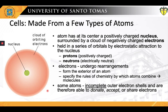It may not come as a surprise, but cells are made up of just a few types of atoms. What is an atom? The illustration shown here is representative of the atom. As we may remember, each atom has at its center a positively charged nucleus, which is surrounded at some distance by a cloud of negatively charged electrons. These electrons are held in a series of orbitals by electrostatic attraction to the nucleus.